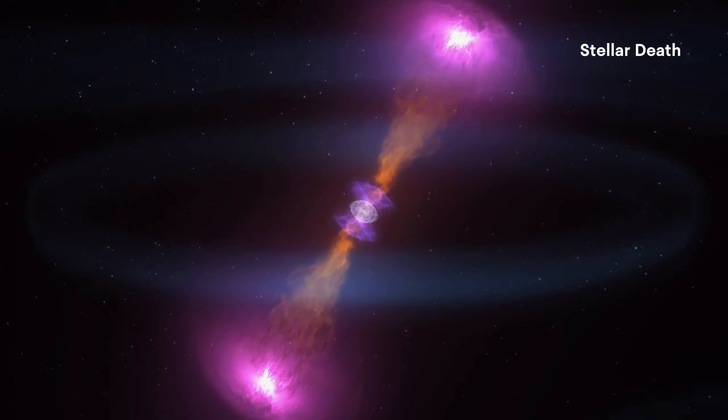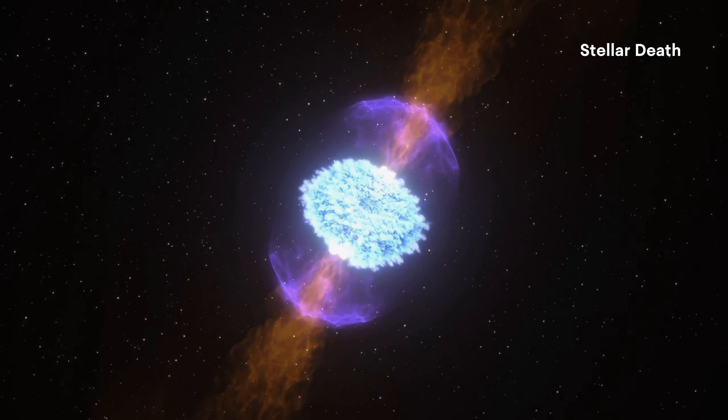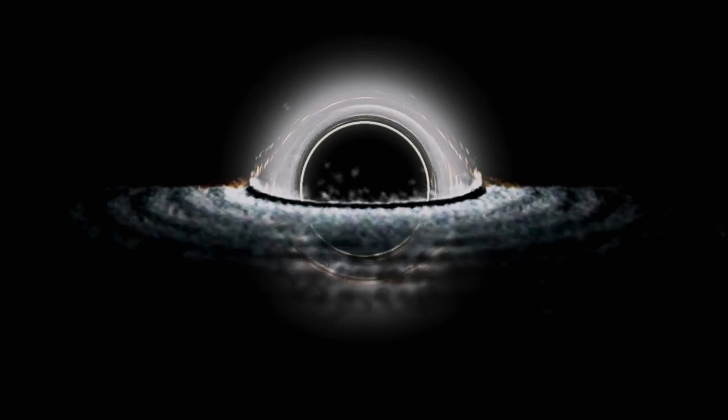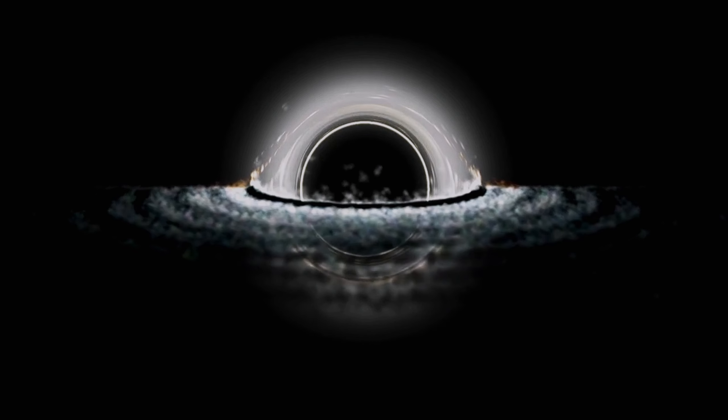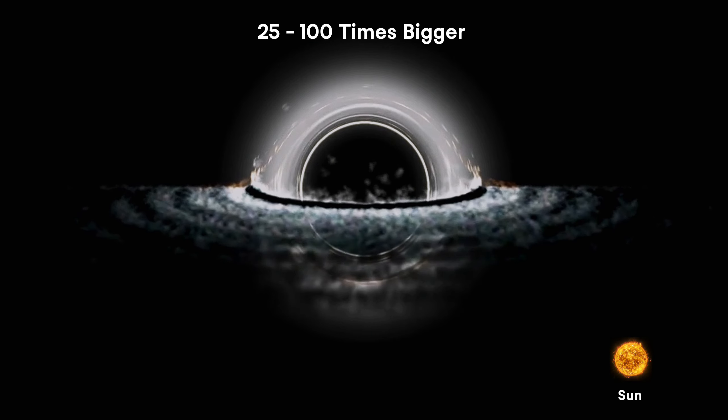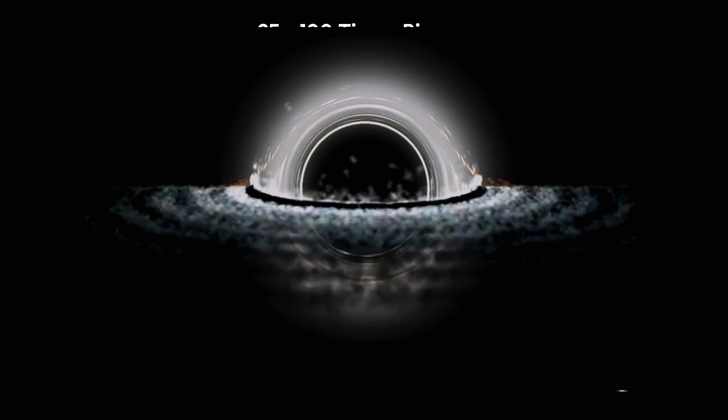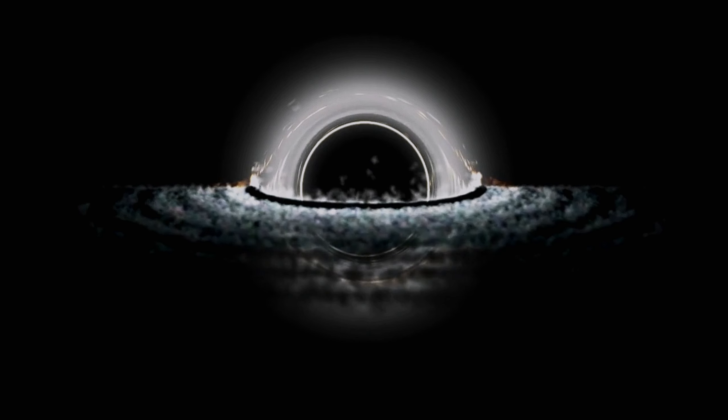The most commonly known way a black hole forms is by stellar death. Some black holes can be formed directly from very big stars, more than 25 to hundreds of times bigger than our sun, when these stars collapse at the end of their lives.